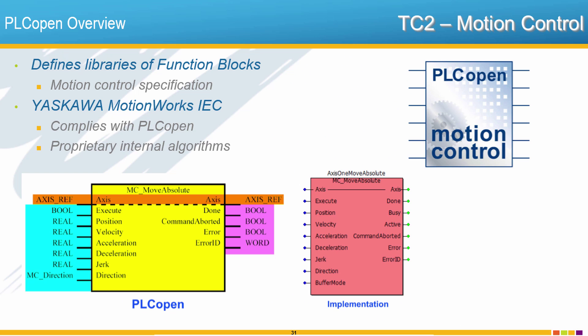PLCopen for motion control really is just a motion control specification. They'll give you the specification for how the different types of move blocks are to work and then it's up to the vendor to implement those in their hardware. So here on the left we see the PLCopen specification for the MCMoveAbsolute function block and then here's the implementation in Yaskawa's case of the MCMoveAbsolute function block. PLCopen describes how this block works and so if there's a PLCopen move absolute block in another vendor's hardware it will work exactly the same way.